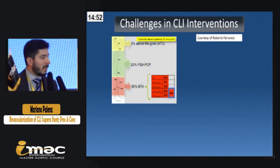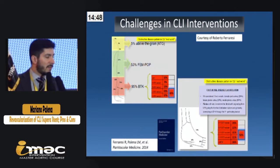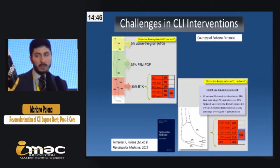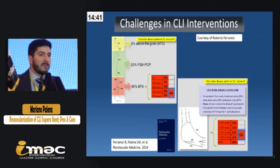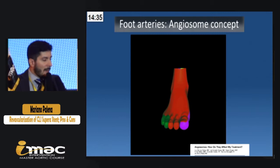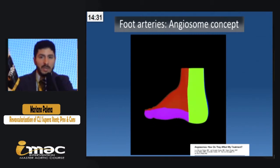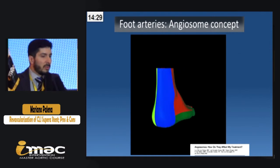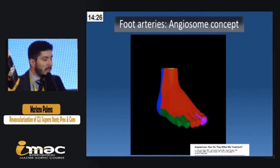When we talk about CLI, we talk about multilevel multivessel arterial disease. In most patients, 50% of them have femoropopliteal involvement, but most patients have tibial and foot artery lesions. In fact, 95% present with long occlusion of the tibial arteries. What we try to do in these patients is to increase the distal flow for the foot, following angiosome concepts.